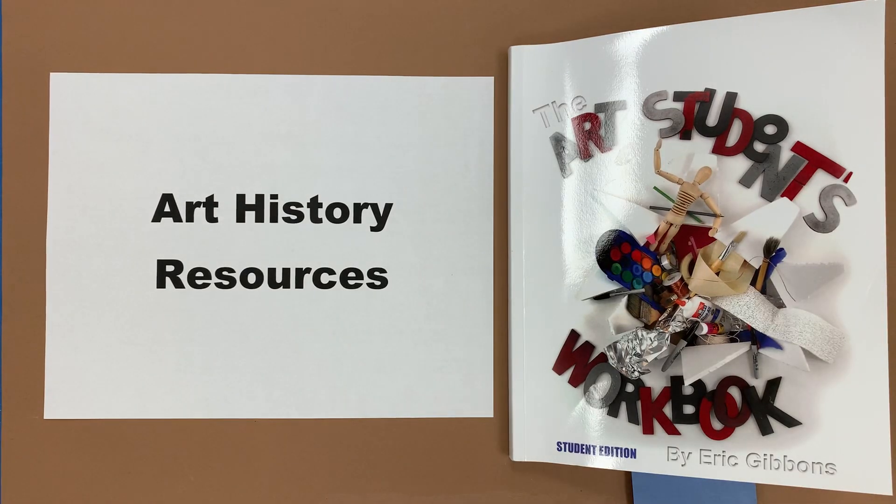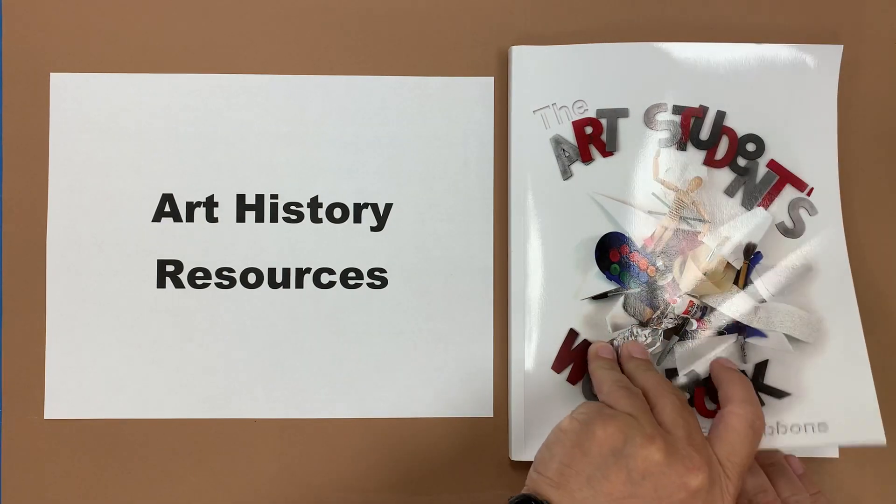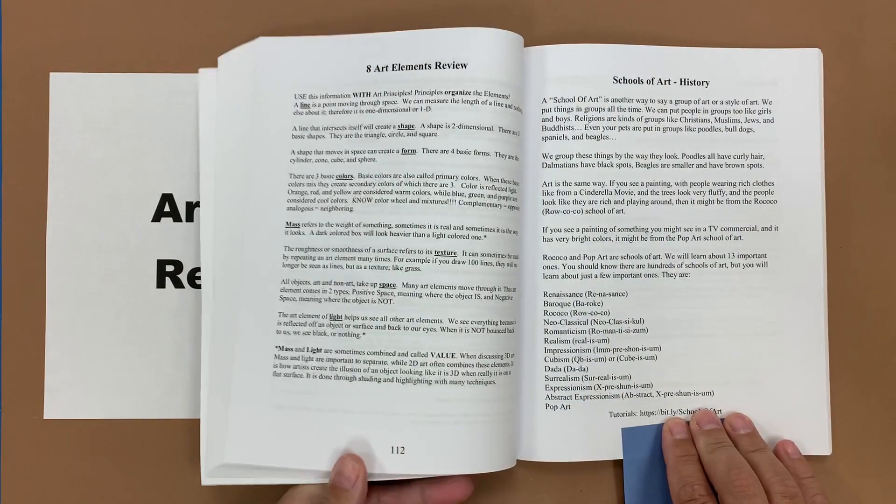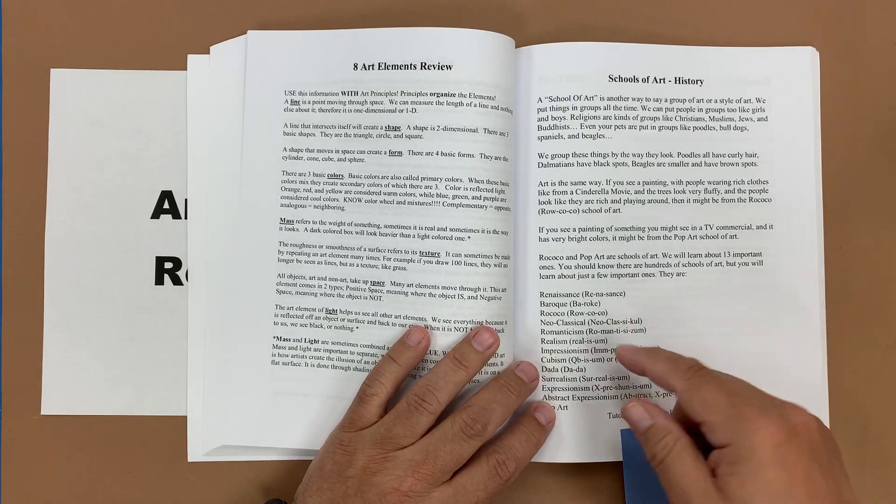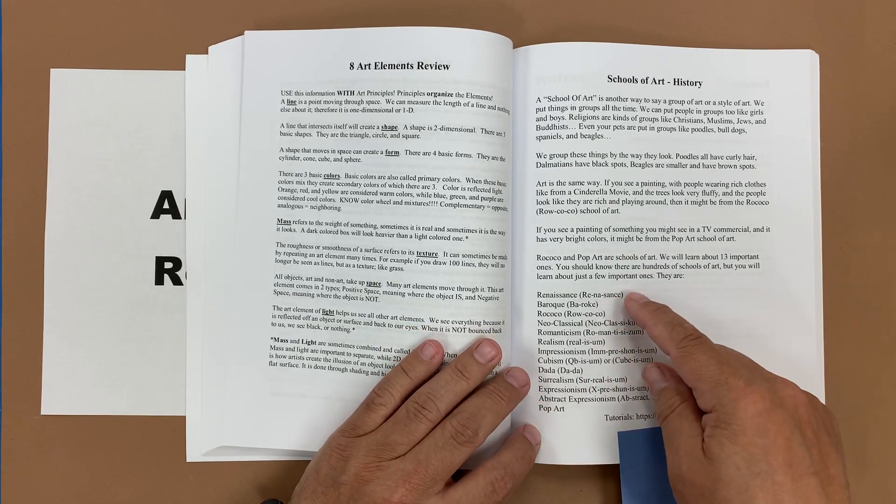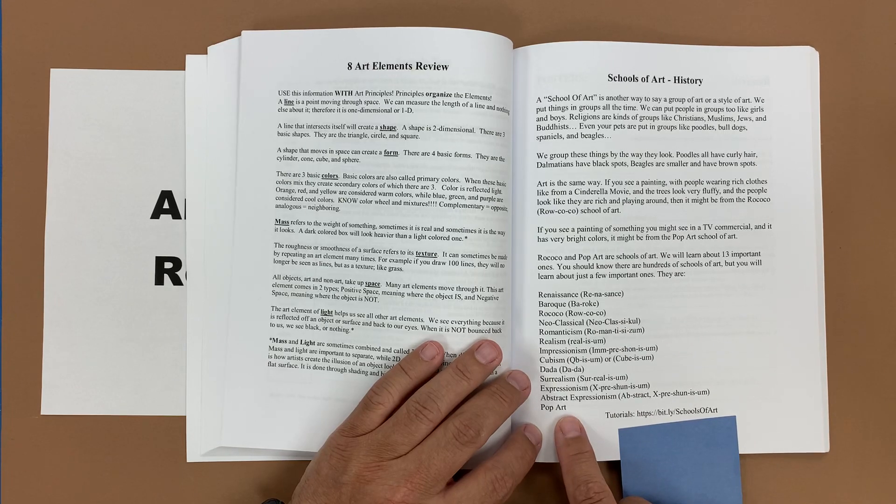These are the art history resource pages that I have available in the art students workbook. They tend to be towards the back of the book and start with an overall explanation of the different schools of art from Renaissance through pop art.